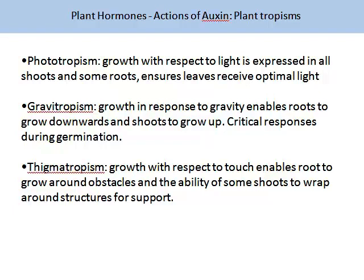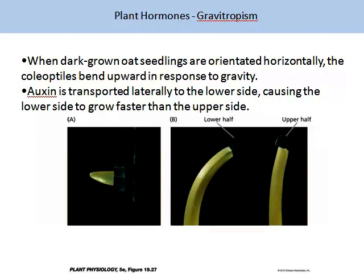Auxin is involved in the actions of three plant tropisms. Phototropism — growth with respect to light — is expressed in all shoots and roots and ensures that leaves receive optimal light. Geotropism is growth in response to gravity, enabling roots to grow downwards and shoots to grow upwards — a critical response during germination. Thigmotropism is growth with respect to touch, enabling roots to grow around obstacles and some shoots to wrap around structures for support. When dark-grown oat seeds are orientated horizontally, the coleoptiles bend upwards in response to gravity. Auxin is transported laterally to the lower side, causing the lower side to grow faster than the upper side, explaining the mode of action of gravitropism.